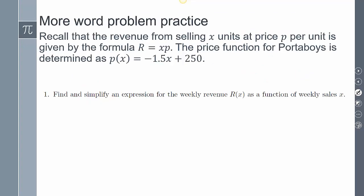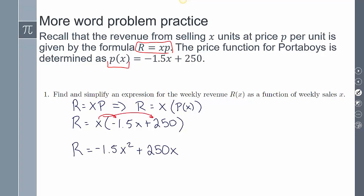Now let's look at a word problem. It says recall that the revenue from selling x units at price p per unit is given by the formula r = xp. If my price demand function for Portaboys is determined as p(x) = -1.5x + 250, find and simplify the expression for the weekly revenue r(x) as a function of weekly sales x. I'm going to use this equation: r = xp. My revenue equals x times my price demand function. I plug that in: x(-1.5x + 250), distribute to get -1.5x² + 250x. This is going to be my revenue function.